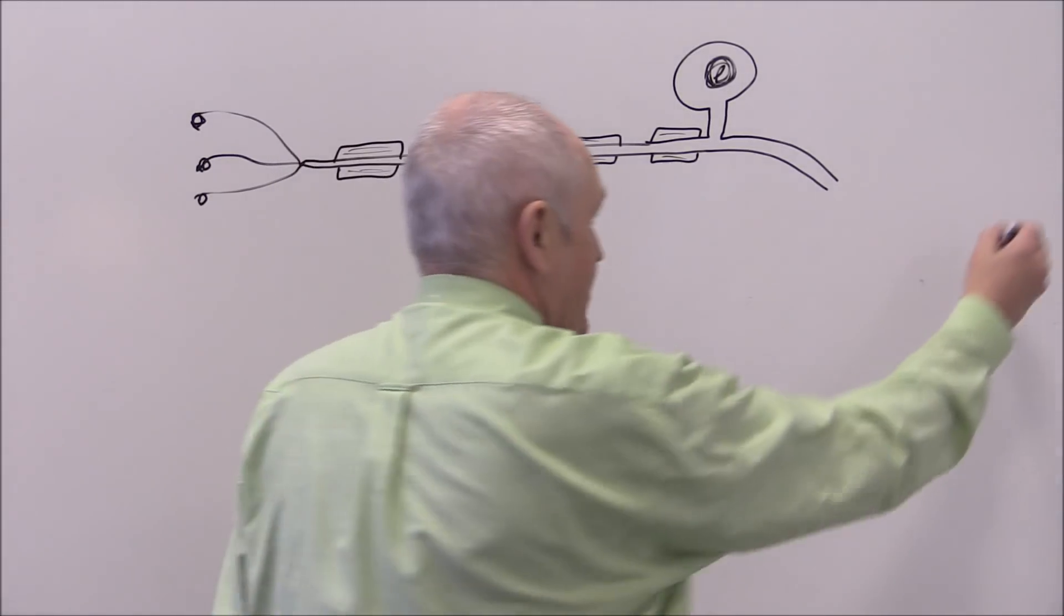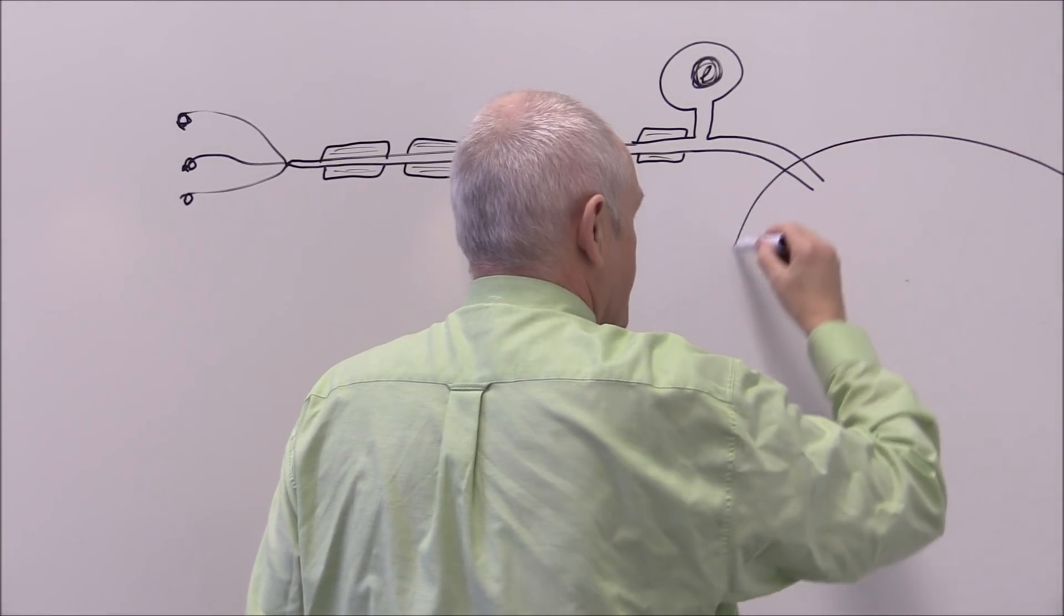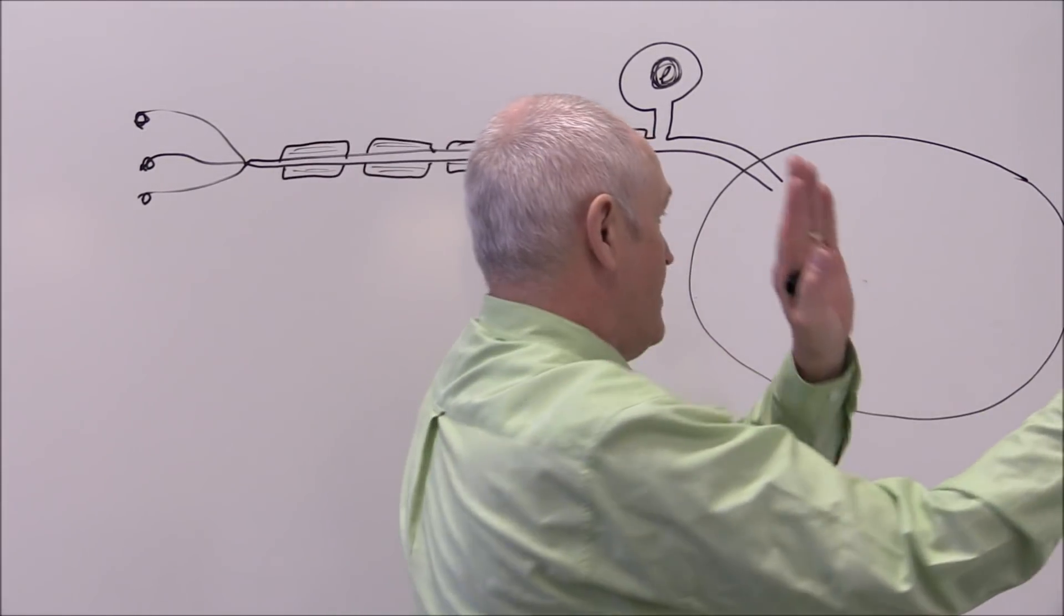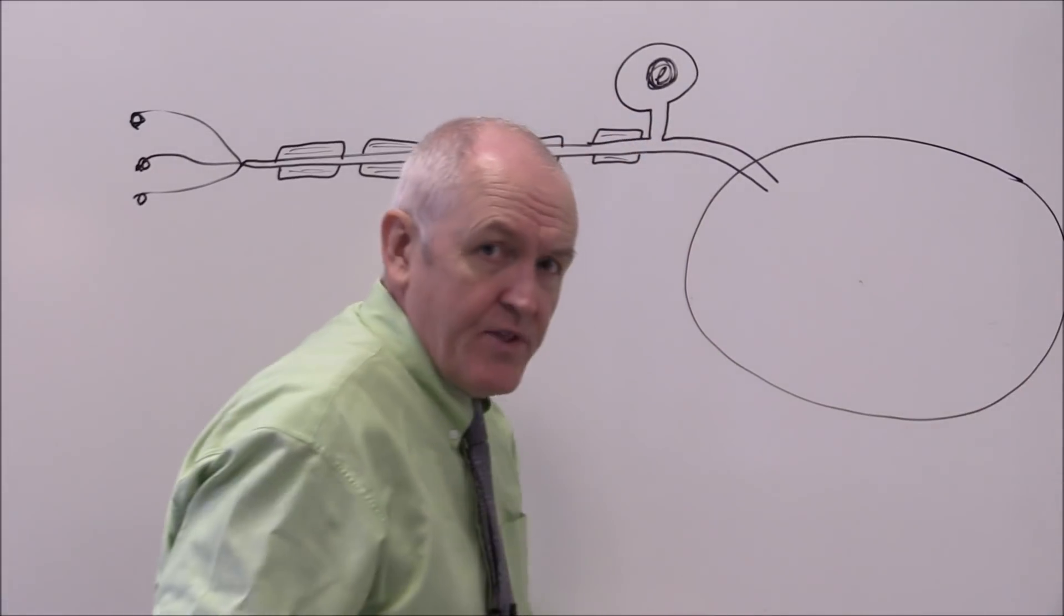So here we have the spinal cord in cross section, that's actually running up and down the plane of the board.